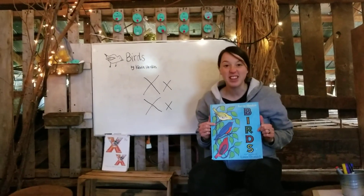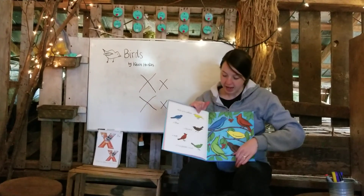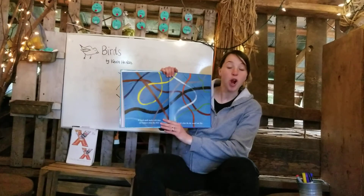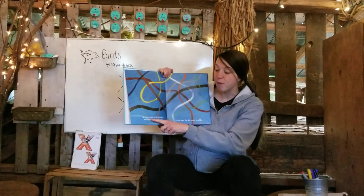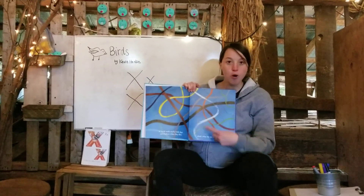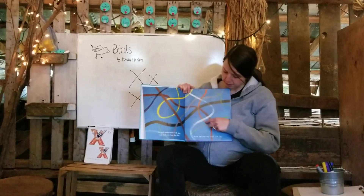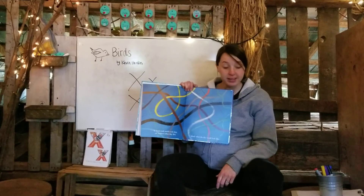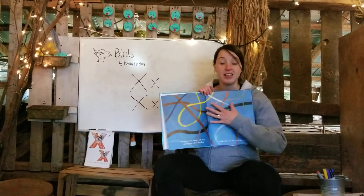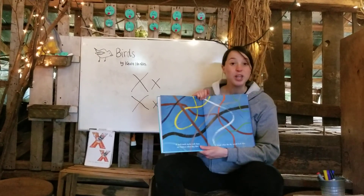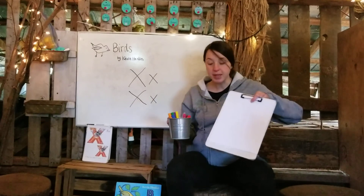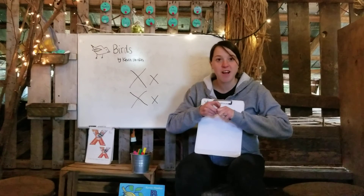I want to show you an activity that goes along with this book. One of my favorite parts is when it says — if birds made marks with their tail feathers when they flew, think what the sky would look like. It would be so beautiful. We would see yellow, and orange, and white, and black, and green all through the sky. I want you to remember what this looks like and think about the beautiful illustrations that Laura Dronsick painted. I want you to try to do the same thing. All you need is some colors like crayons or markers and a piece of paper, and you can try to make the tail feather lines in the sky.